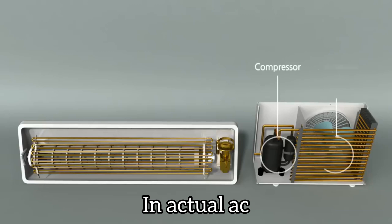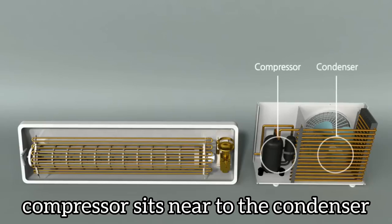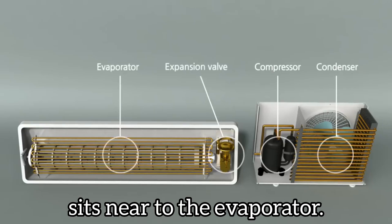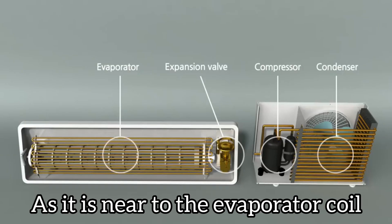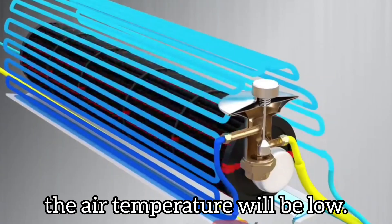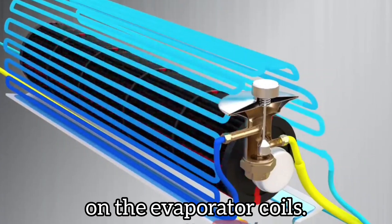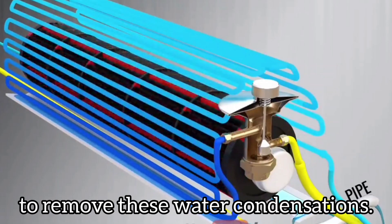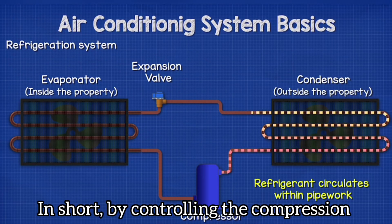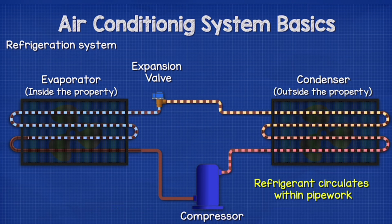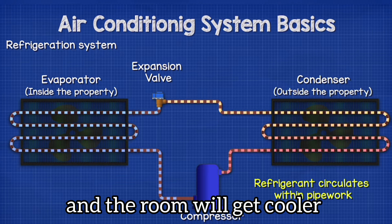In actual AC, the compressor sits near the condenser and the expansion valve sits near the evaporator. As it is near the evaporator coil, the air temperature will be low. This will lead to water condensation on the evaporator coils. That's why we need a pipe to remove this water condensation. In short, by controlling the compressor and the expansion valve, we can control the coolant and the room will get cooler than the environment.